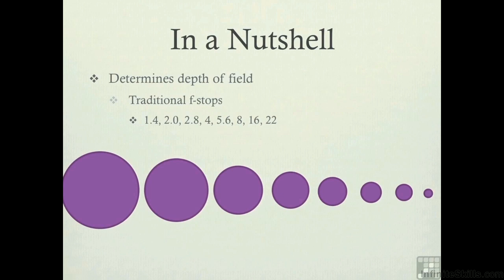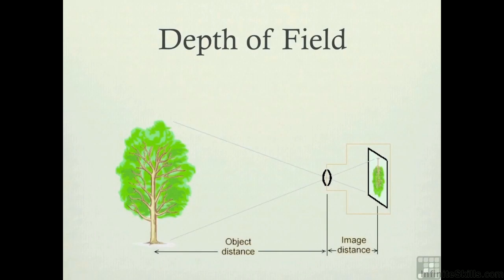What that causes is an increase in depth of field, which is a really cool thing when you think about it. So if you look at something like this, we have a photograph of a tree, and we have the lens, and then we have the photograph being taken by the camera. The information goes through the lens, goes through the glass, you focus on an area, and then it's deposited on the film. How that f-stop is adjusted will determine how much is in focus.